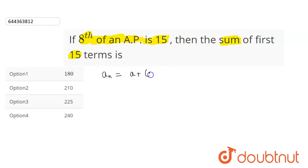We have a formula for the nth term to be equal to a plus (n minus 1) into d, where a is the first term and d is the common difference. So in the question we are given a8 is equal to 15, which will be equal to a plus (8 minus 1) into d.